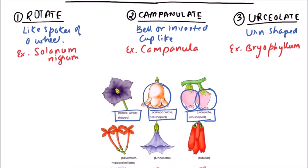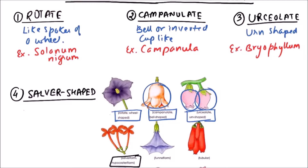The next type is Salver-shaped. In this type of gamopetalous corolla, a tubular appearance is there with spreading lobes. So it is tubular with spreading lobes. The example includes Clerodendron.